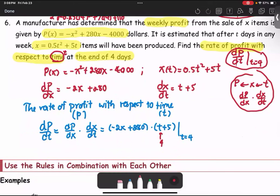T can go there as the number 4. But X, since X depends on time, as T equals 4, X equals 0.5 times 4 squared plus 5 times 4.